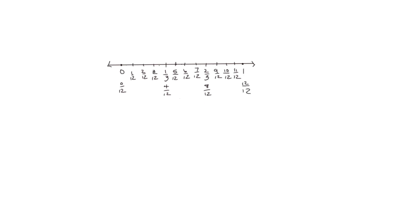Now we can use our number sentences to show the equivalence of these fractions. These two follow the same point on the number line, so based on our number line we see that one third is equivalent to four twelfths. To prove it with our number sentences: if we start with one third and want to decompose into smaller units to get four twelfths, we multiply both the numerator and the denominator by four, and we get four twelfths.